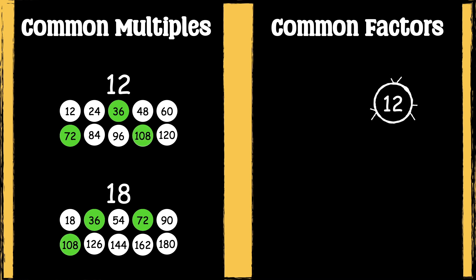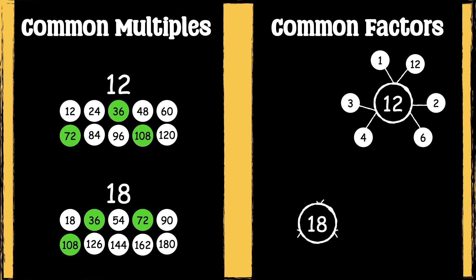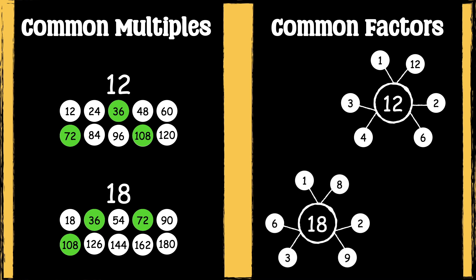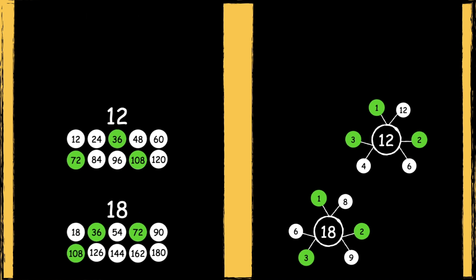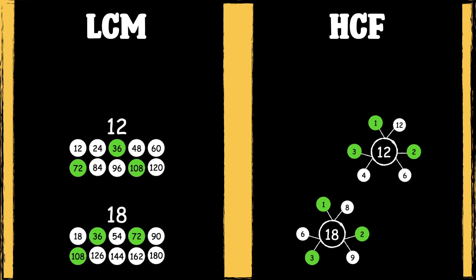Here are the factors of 12 and the factors of 18. The common factors are 1, 2 and 3. So we can see that the lowest common multiple of 12 and 18 is 36, and the highest common factor of 12 and 18 is 3.